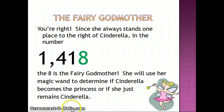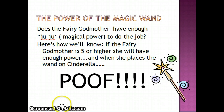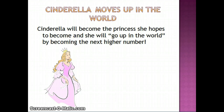Now she's going to use her magic wand to determine if Cinderella becomes the princess or just remains Cinderella. Does the fairy godmother have enough juju or magical power to do the job? If the fairy godmother is five or higher, she will have enough power and when she places the wand on Cinderella — poof! — Cinderella moves up in the world and becomes the princess by becoming the next higher number.